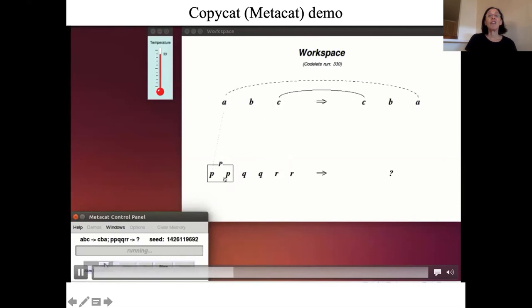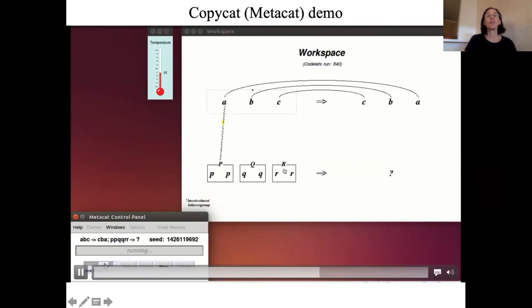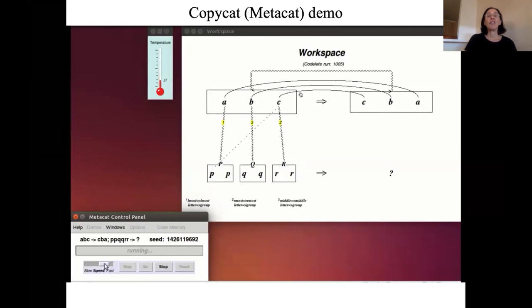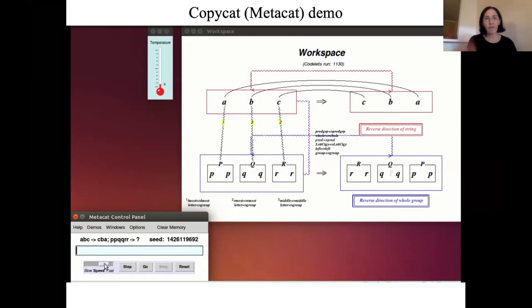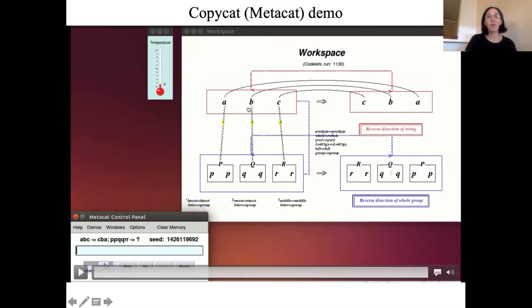The darkness of the line is how certain the program is about the structure it's trying to build. And you can see as structures are built, the temperature goes down, which makes the system much more deterministic and focused on certain concepts like groupings. Here it's quite focused on the grouping structure here and also the successorship structure here. It's able to make a successorship grouping out of the whole thing here. It is able to determine this was a reverse direction of the string. And so it reverses the direction of the group. Copycat is a dynamic program. It's not like a feed forward neural network in which there's no feedback. Here we have quite a bit of feedback, but we also have some symbolic knowledge about the domain.